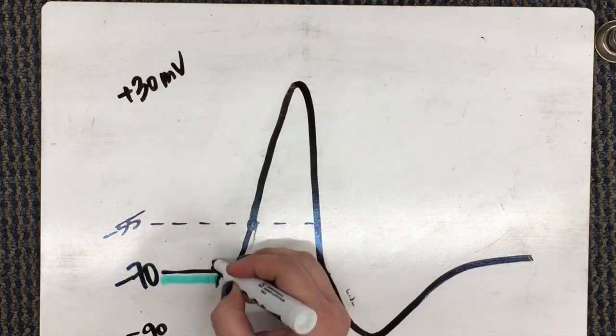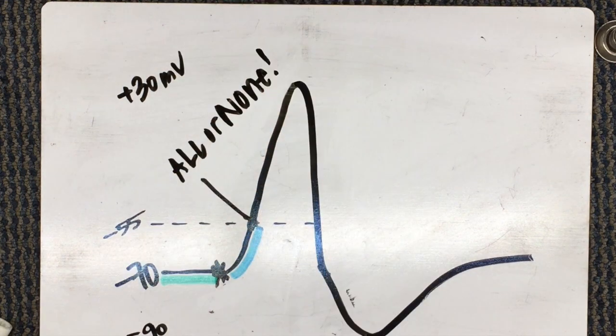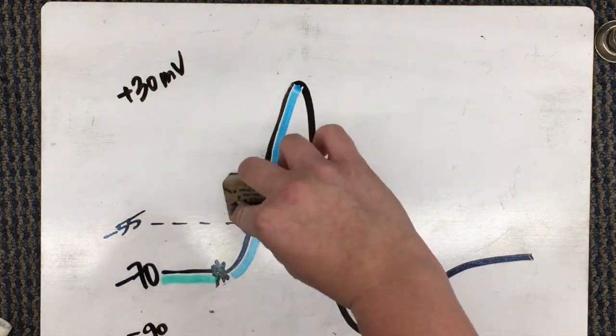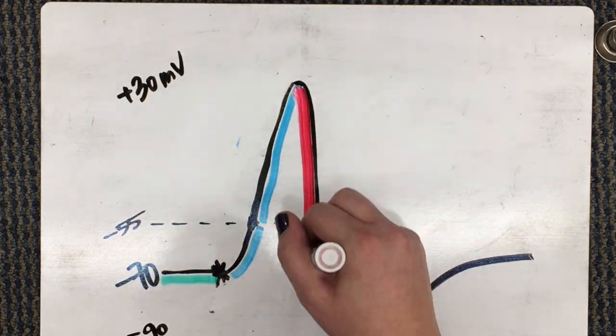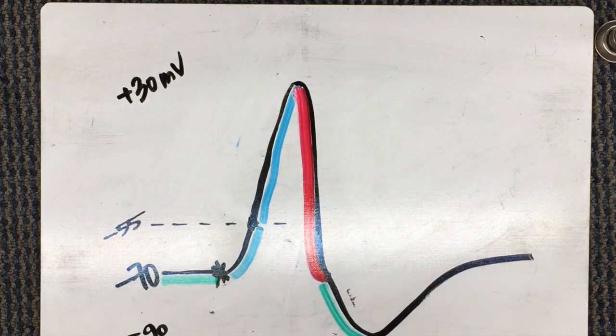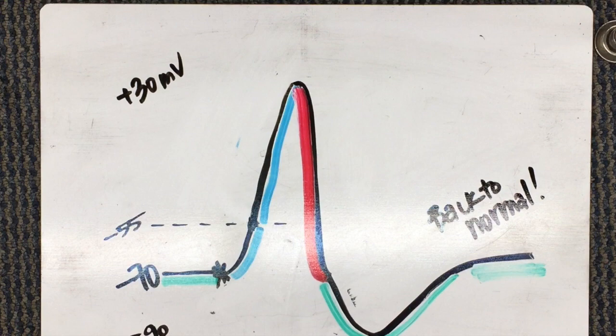Going through that one more time: our cell is at rest, some sort of stimulus occurs, and it reaches threshold, creating an all-or-none event. Depolarization is due to an influx of sodium, creating an overall charge of 100 millivolts. Repolarization occurs, followed by hyperpolarization, and then the sodium-potassium pump gets everything back to normal.